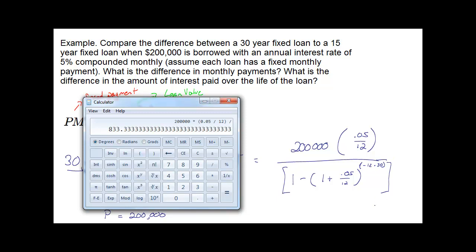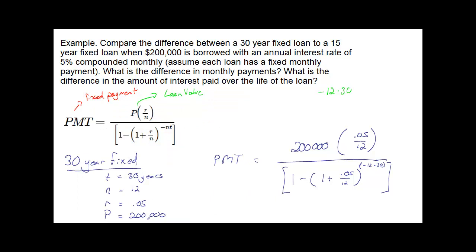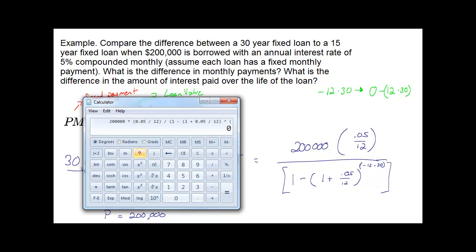The brackets are required to keep the entire expression in the denominator. I'm dividing by, in parentheses, 1 minus, and then in parentheses again, my base: 1 plus 0.05 divided by 12. Closing the base and raising to a power. To get negative 12 times 30, I use 0 minus 12 times 30. When I hit equals, my fixed monthly payment for this 30-year loan at 5% is $1,073.64.